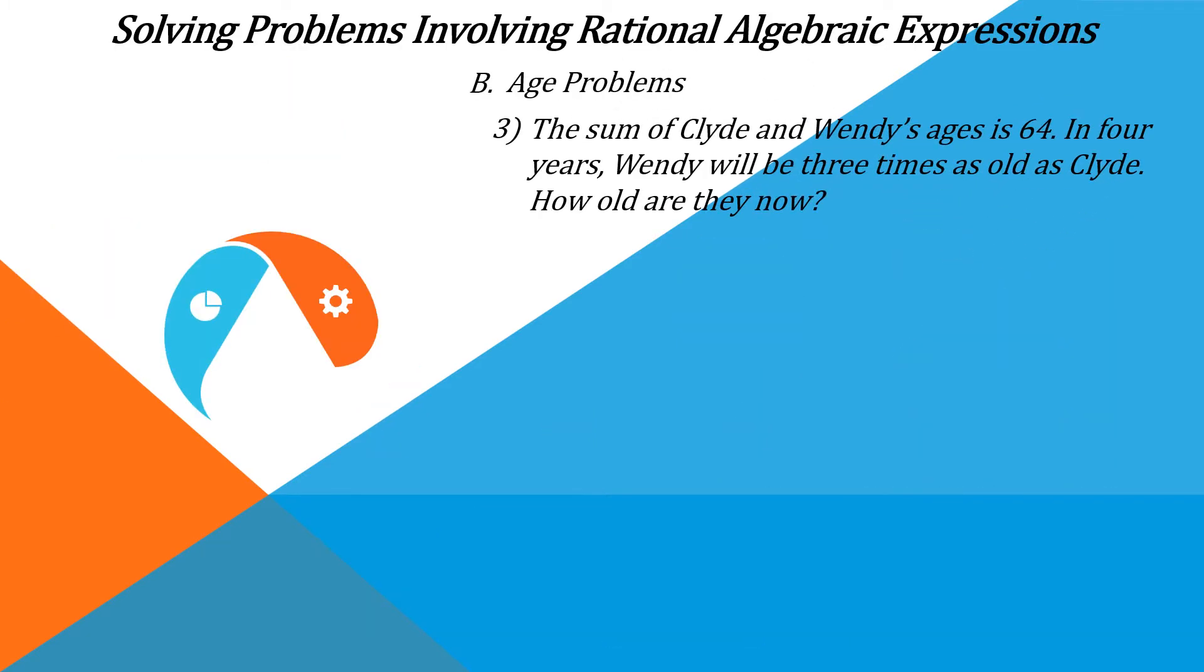Age Problems. The sum of Clyde and Wendy's ages is 64. In 4 years, Wendy will be 3 times as old as Clyde. How old are they now?